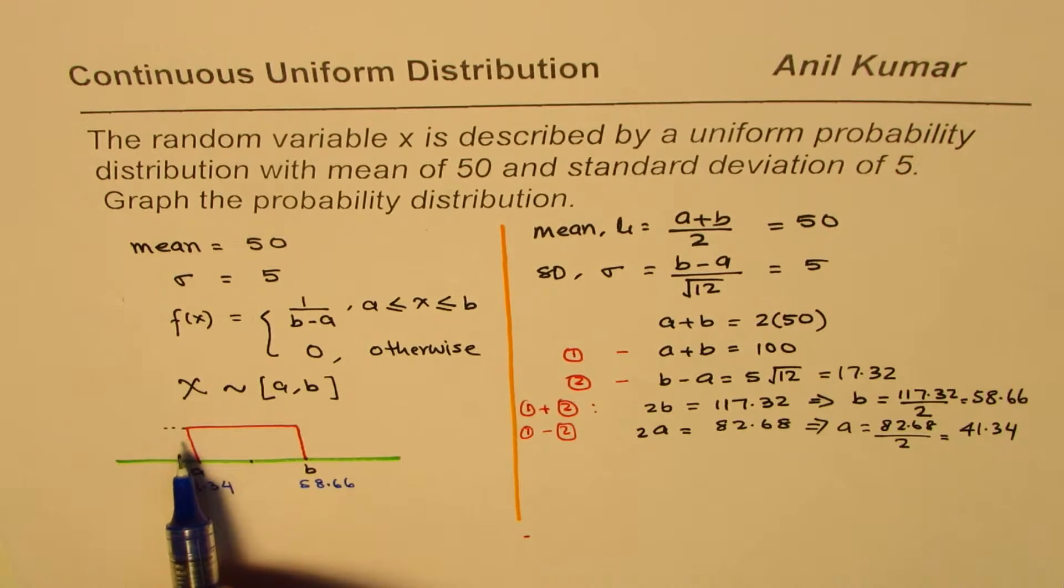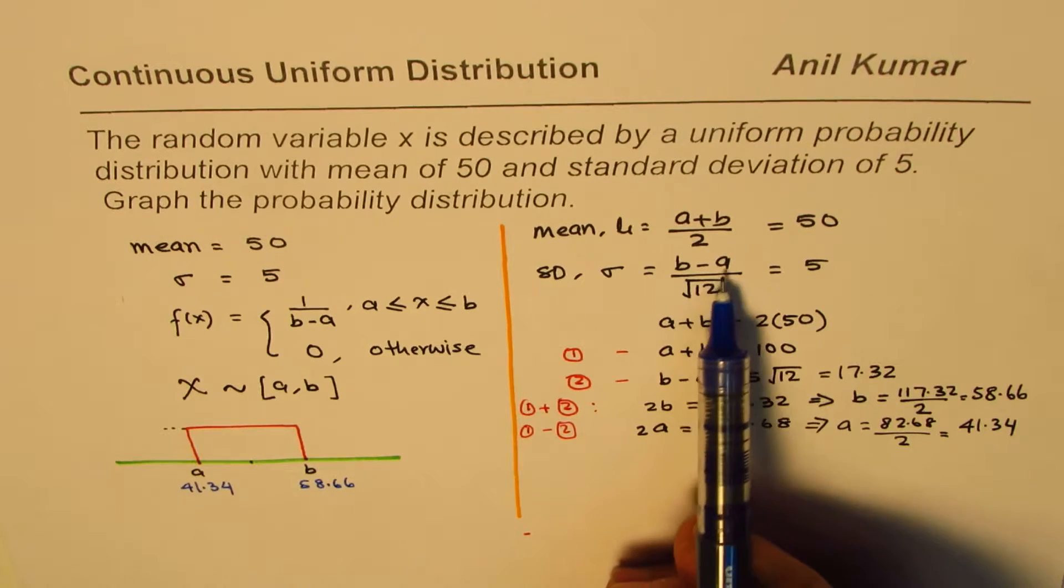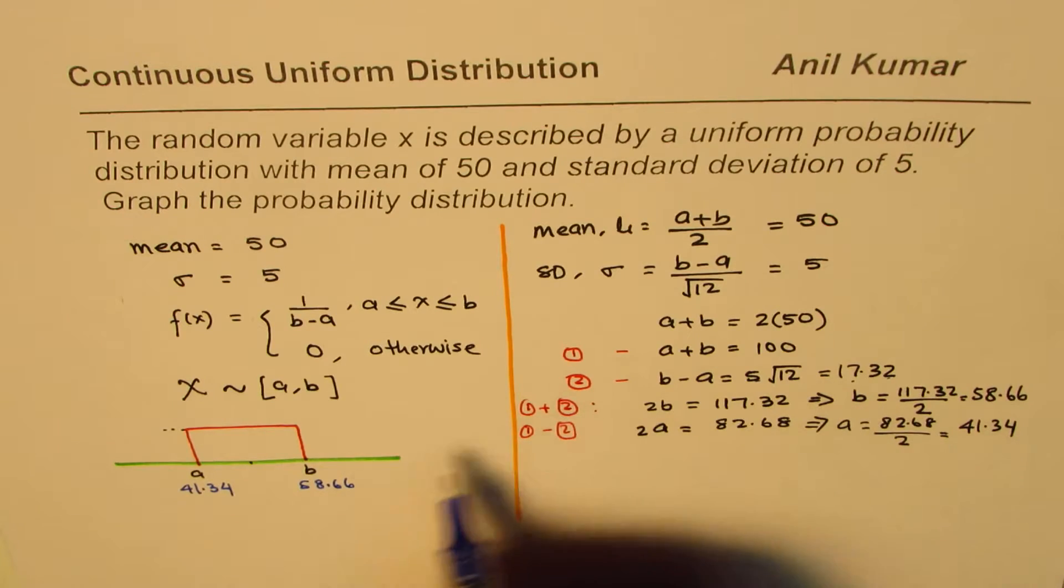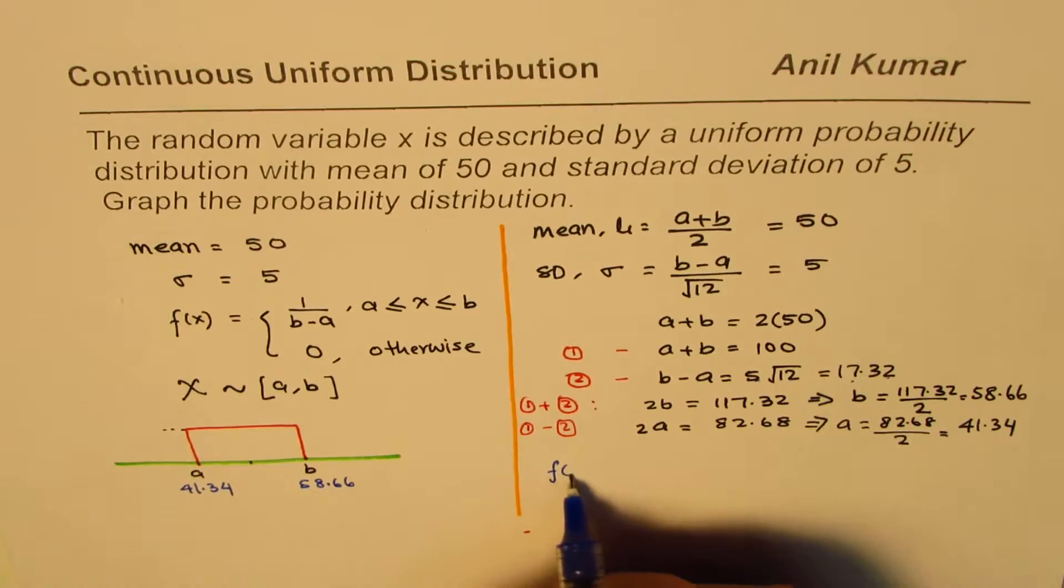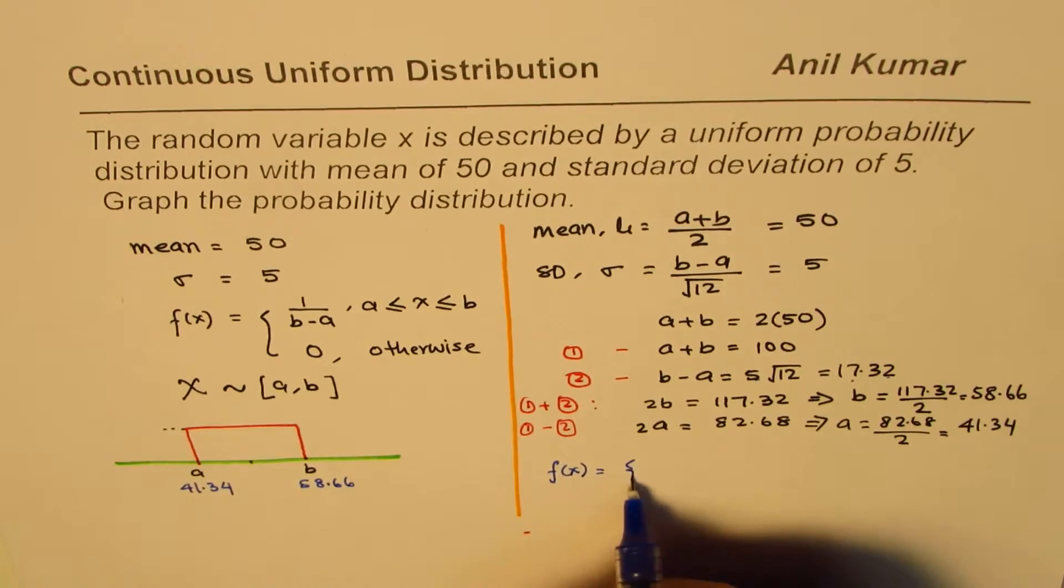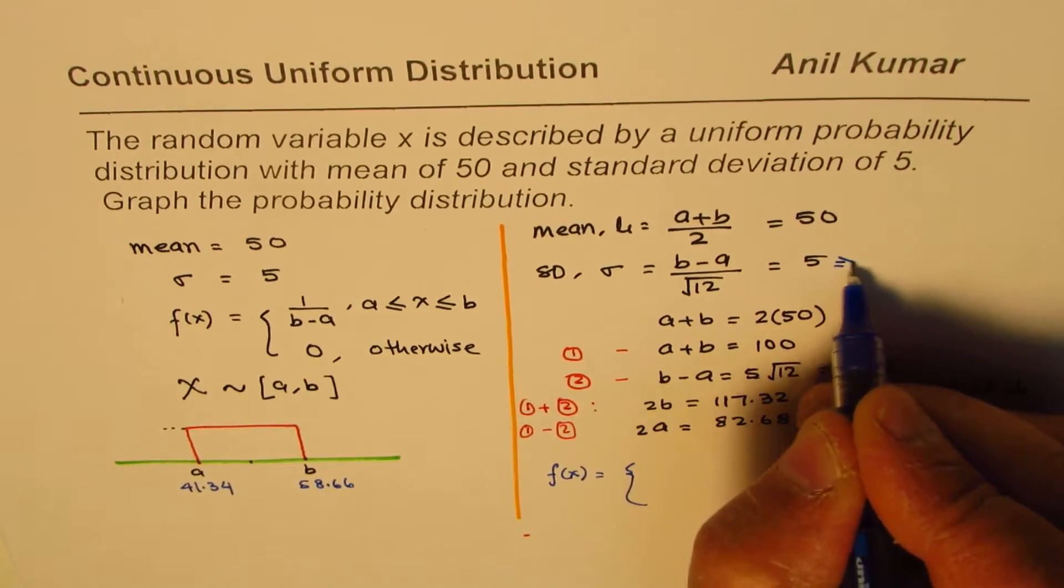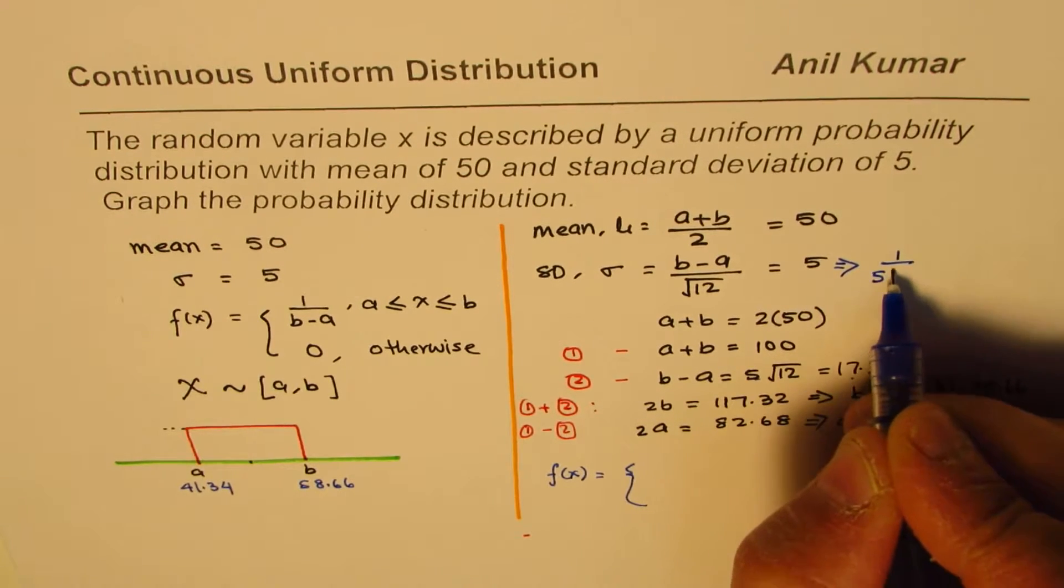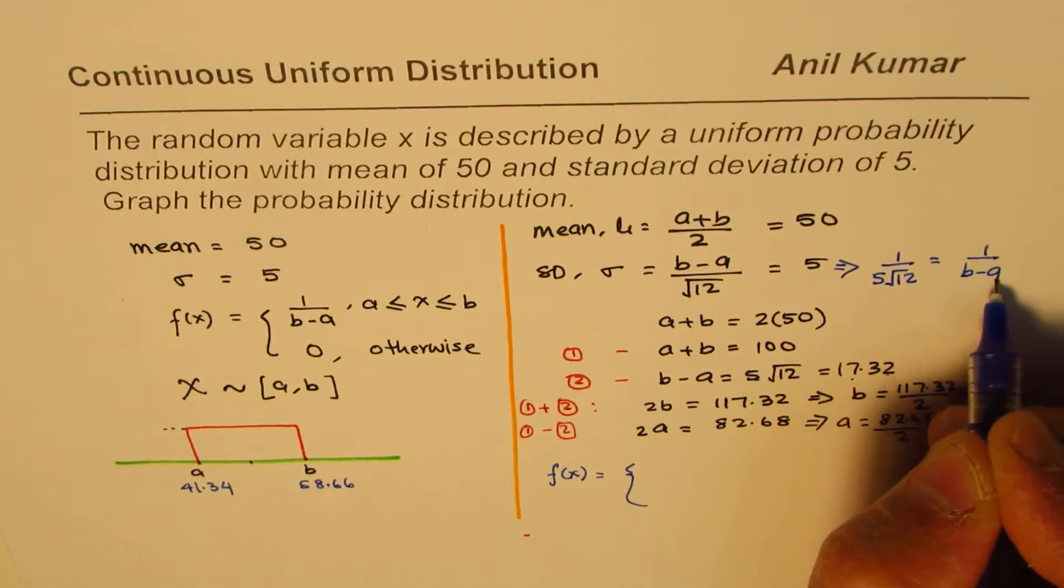Now, what is the value of the function, which is 1 over b minus a? You could find directly from here also. Do you see that? b minus a is 5 times square root of 12, which is 17.32. So we can get from there also. Anyway, we could now define the function of x as equal to, as we started with, 1 over b minus a. So we can say this implies 1 over 5 square root 12 equals 1 over b minus a.